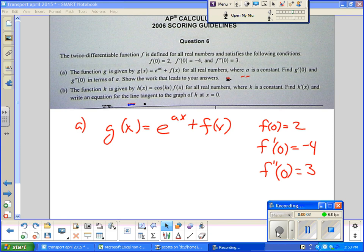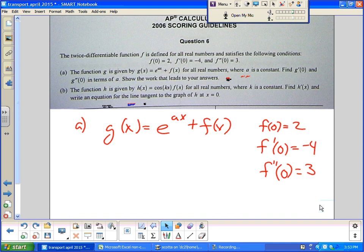Alright, so here's 2006 score. We're going to score this problem, question number six, free response question. It says a twice differentiable function f is defined for all real numbers and it gives three initial conditions which I've written down over here.